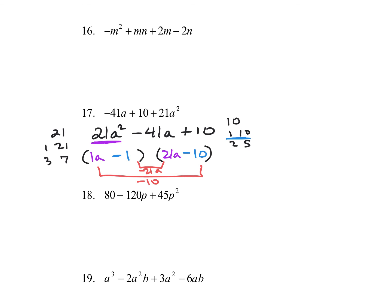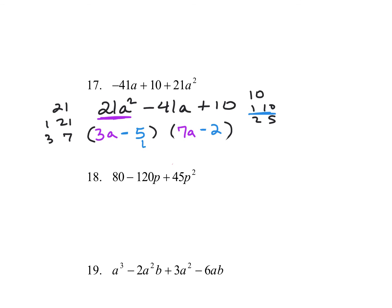Trying 3 and 7 with 2 and 5: inside gives negative 35A, outside gives negative 6A — adding them gives negative 41A, so this is the correct one. That's how you factor using guess and test, though it can be tedious and require multiple FOIL checks.